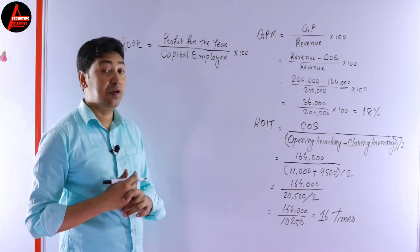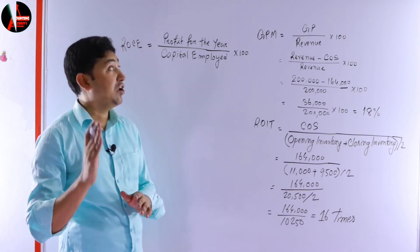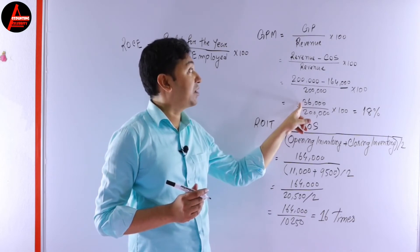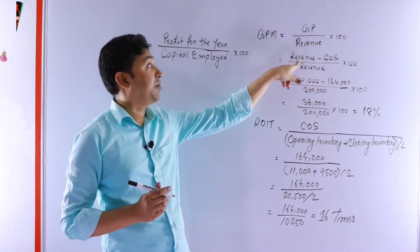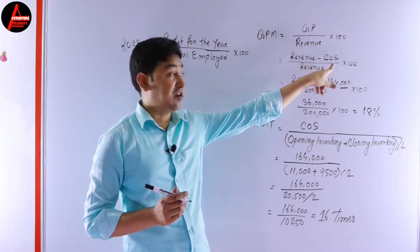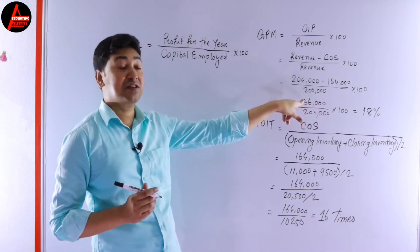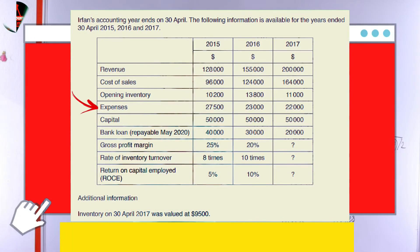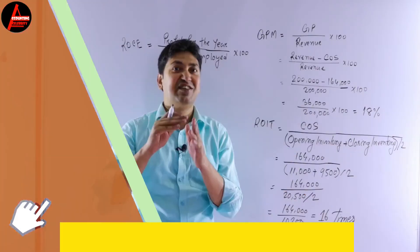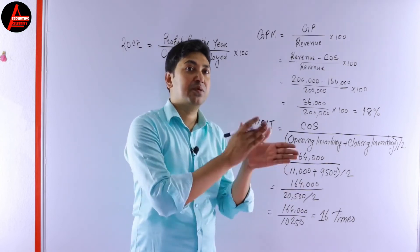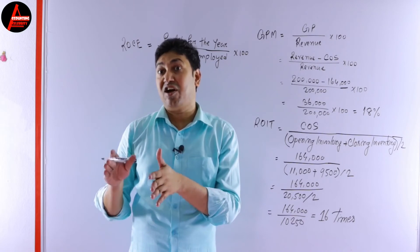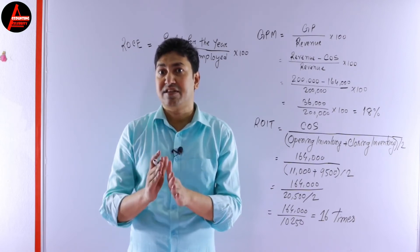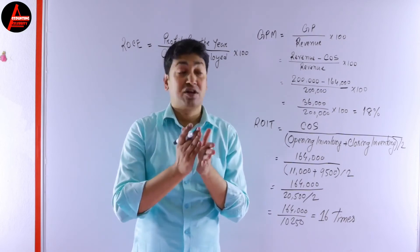So first we need to calculate profit for the year. We already calculated gross profit as $36,000 — that was revenue minus cost of sales. Looking at 2017, we have expenses of $22,000. Since gross profit plus other incomes minus expenses equals profit for the year, and there is no other income in this question, we subtract the expenses from the gross profit.